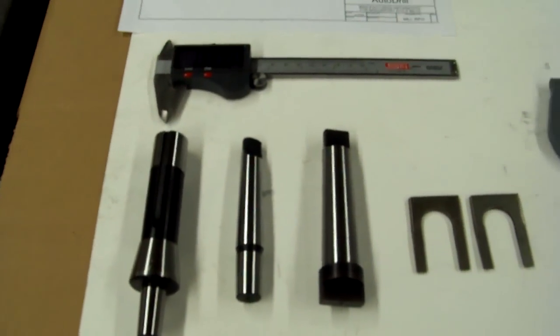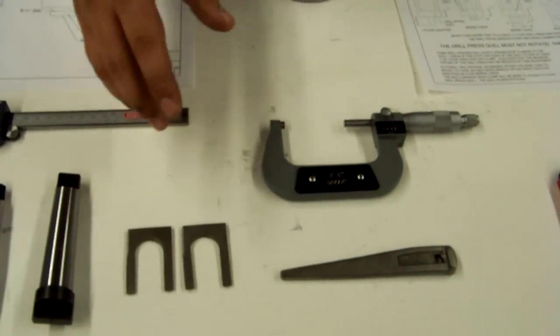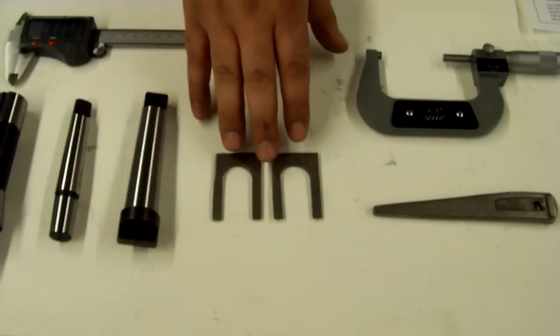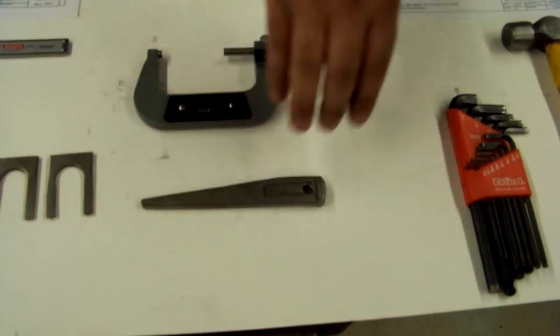Some of the tools you might need to get these dimensions is a caliper or a micrometer. To remove the key chuck, you might need to use for a Jacobs taper wedge sets, or for a Morse taper, a drift key with a hammer.